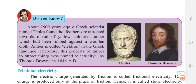About 2,500 years ago, the Greek scientist Thales found that feathers were attracted towards a rod of yellow-colored amber that had been rubbed against a woolen cloth. He was the first to observe this. Amber is called 'electron' in the Greek language. This property of amber to attract things was later turned into the word 'electricity' by Thomas Browne in 1646 AD.